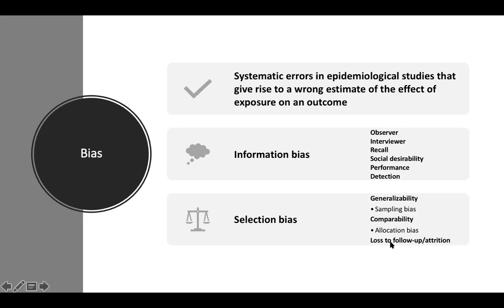Lost to follow-up, or attrition, happens in prospective studies — like cohort studies where you're following people into the future — and then some people lose their job and move out of town, or they can't stay in your study. Some people even die, or someone is just no longer interested in the study. Those participants are lost to follow-up, or attrition.